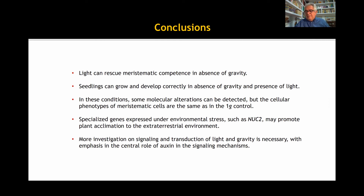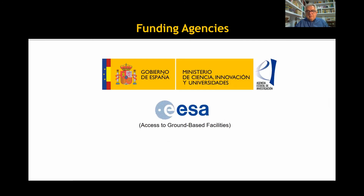Emphasis should be put in the central role of auxin in the signaling mechanisms and in answering questions that were left unanswered, such as the lack of alteration in the auxin distribution pattern at the root tip. Funding for this work has been provided by the Spanish Research Agency of the Spanish government and access to the random positioning machine of the University of Toulouse by the Ground-based Facilities Programme of the European Space Agency.